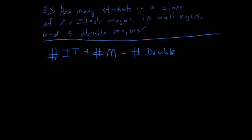So the doubles have been counted twice, so I've got to subtract them off once. Alright. Again, this is pretty quick and easy. 20 ITEC majors plus 10 math majors minus five double majors gives you a total of 25 total students in the class.